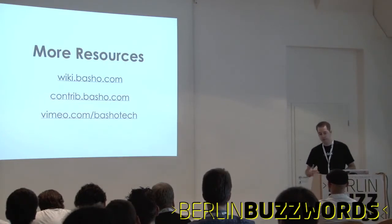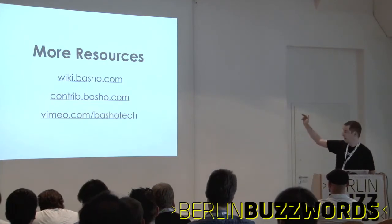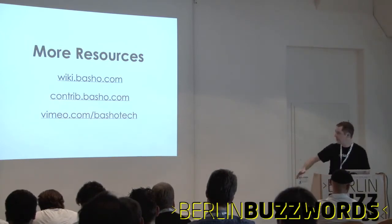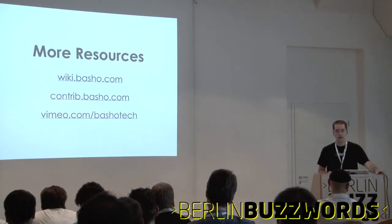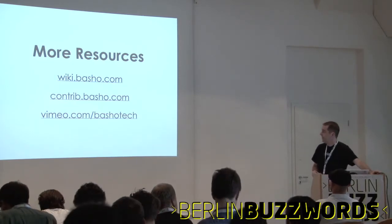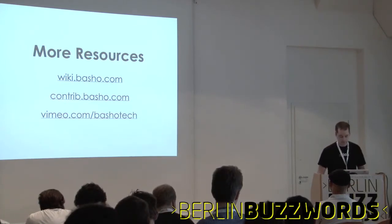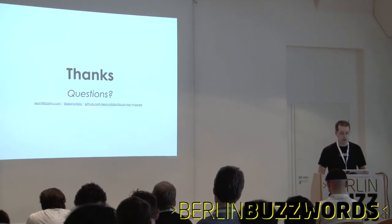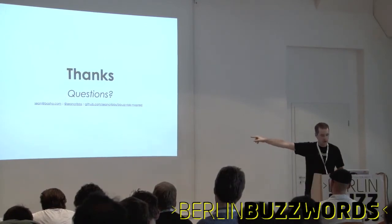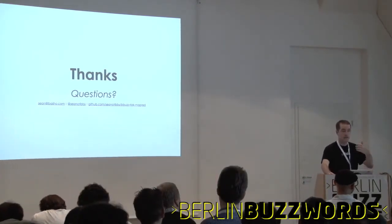For more resources on Riak or MapReduce, there's a great wiki under constant development. There's Riak function contrib, which has useful functions for MapReduce. We have videos on schema design for Riak — basically how to design your key space — and on MapReduce, with more coming in the next couple of months. Thank you, I appreciate questions. The presentation is on GitHub under seanCribbs/bbuzz-riak-mapred. You can email me at sean@basho.com or find me on Twitter at Sean Cribbs.